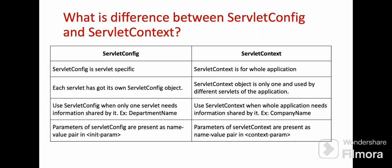What is the difference between ServletConfig and ServletContext? ServletConfig is servlet-specific, whereas ServletContext is available for the whole application. Each servlet has its own ServletConfig object, whereas ServletContext is shared — there is only one and it is used by all servlets of the application. Use ServletConfig when only one servlet needs some information; for example, a department name is specific to one servlet. Use ServletContext for information common to all servlets, like a company name. The parameters of ServletConfig are present as name-value pairs in init-param, whereas ServletContext parameters are in context-param.